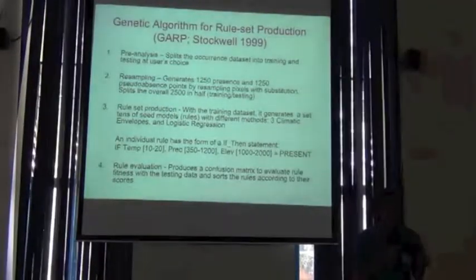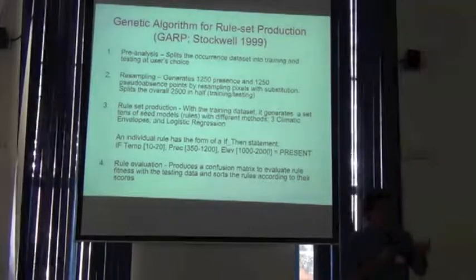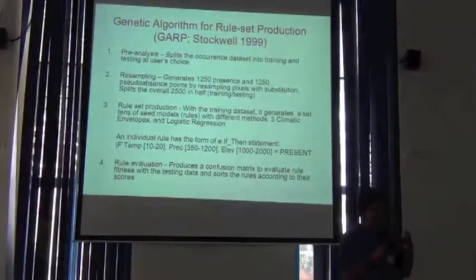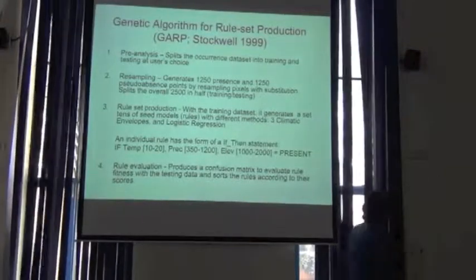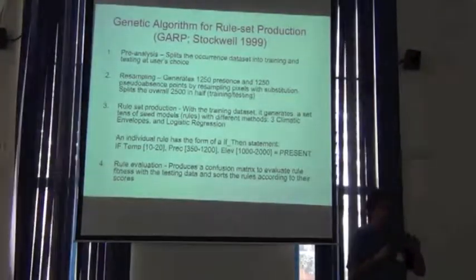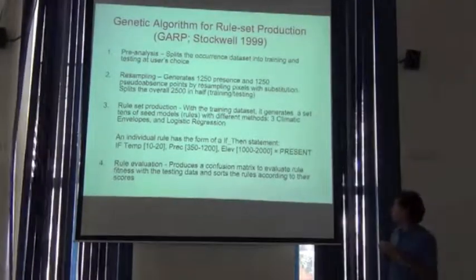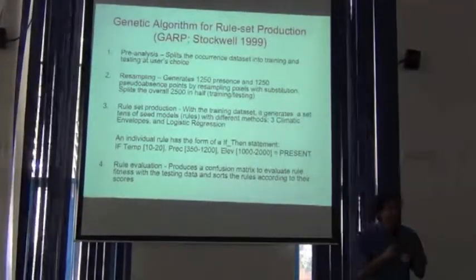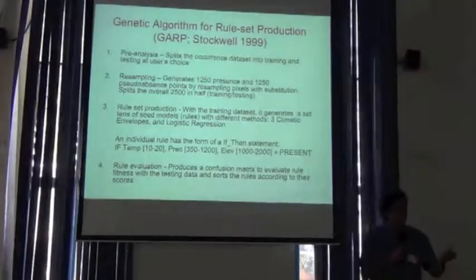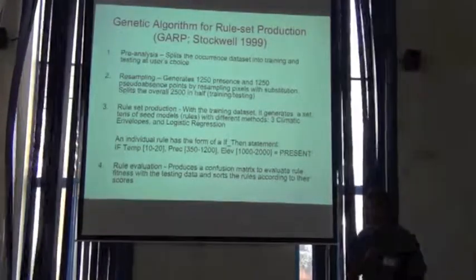It doesn't matter how many points you have in your initial set — you always end up with 2,500 points of presences and absences. Then it splits this whole set of 2,500 points in half, using one half for training the model and the other half for internal testing of the model.